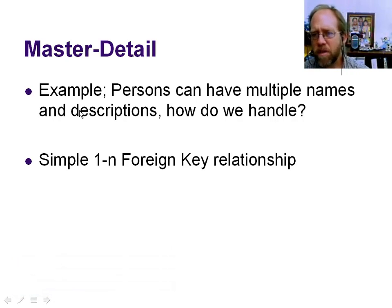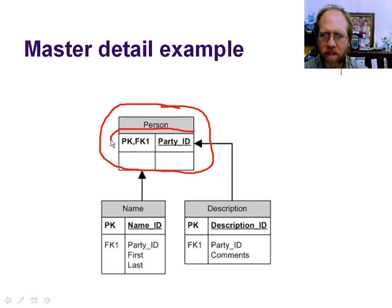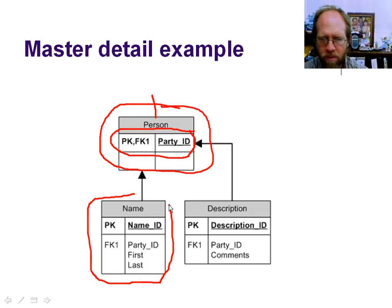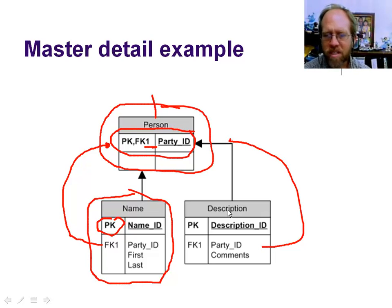How do you handle master-detail relationships? A simple example is people having multiple names or multiple descriptions. You handle this with a standard master-detail table. You have the person with its party ID, and since parties can have names, you create a 'name' table with a name ID as the primary key and a foreign key leading back to the person. So now this person can have multiple names. Similarly, a description table with a foreign key back to the person allows multiple descriptions. It's a pretty straightforward and simple design.